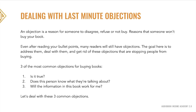Section four of five is dealing with last-minute objections. An objection is a reason for someone to disagree, refuse, or not buy. Even after reading your bullet points, many readers will still have objections — the goal here is to address them, deal with them, and get rid of what's stopping people from buying. Three of the most common objections are: number one, is this true? Number two, does this person know what they're talking about? And number three, will the information in this book work for me?